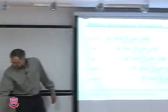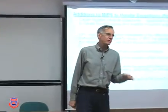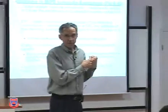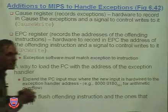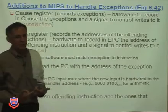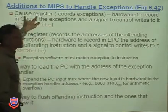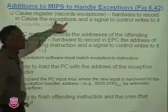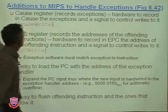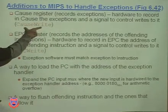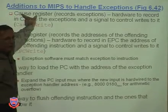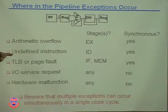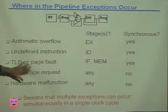Now let's talk about MIPS specifically, because we're going to make some changes to our datapath to handle exceptions. The first thing is we need to record the cause of the exception — we have several possible causes — so we need a cause register, a piece of hardware to record the cause, with a control signal called 'cause write' to write into it.